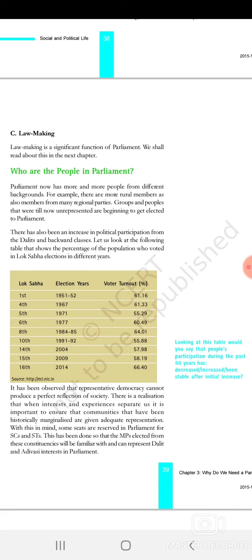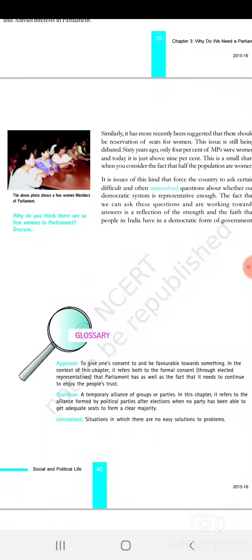People in Parliament can be independent members from rural or urban areas, or members of a political party. Voter turnout was 66.40%. Among MPs, women's representation has been low - previously around 4% and now around 9%. There is still a need for greater representation of women and backward classes in Parliament.